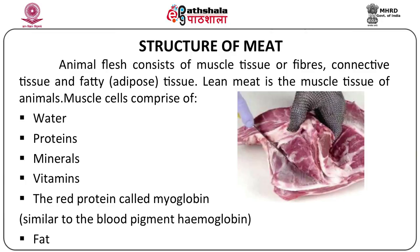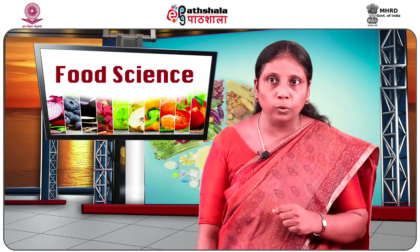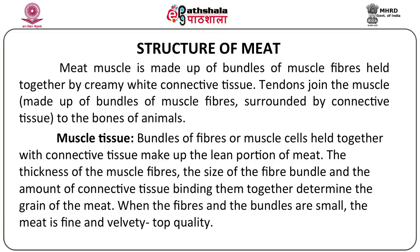Now let us look at the muscle tissue of animals. The muscle contains water, proteins, minerals and vitamins, and also a red pigment called myoglobin. Muscle tissue consists of bundles of fibers or muscle cells held together by the connective tissue, and they make up the lean portion of meat.